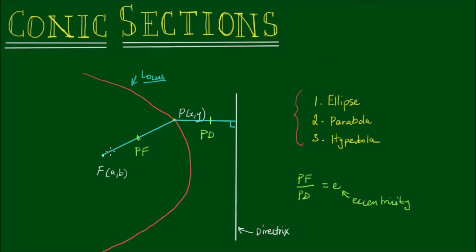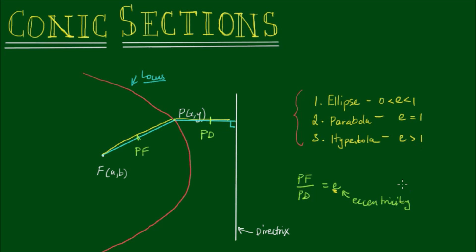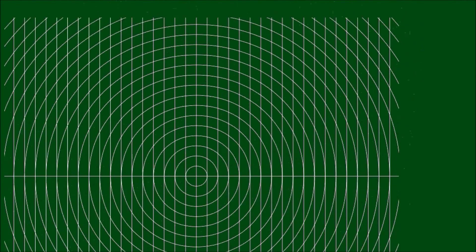As long as the distance from point P to the focus and the distance from point P to the directrix maintain a constant ratio called the eccentricity, we will form one of these three shapes. To form an ellipse, the eccentricity must be between 0 and 1. To form a parabola, the eccentricity is equal to 1. And to form a hyperbola, the eccentricity is greater than 1.